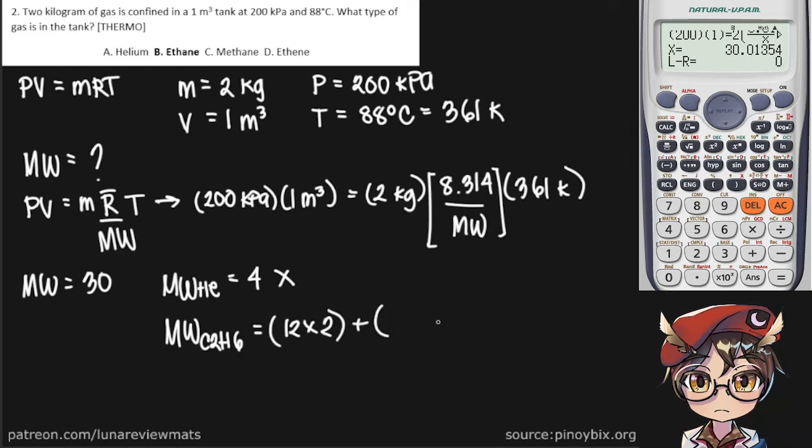In addition, hydrogen has a molecular weight of 1, and ethane has 6 of those. That's 24 plus 6, giving you a molecular weight of 30, which coincides with the molecular weight we computed.